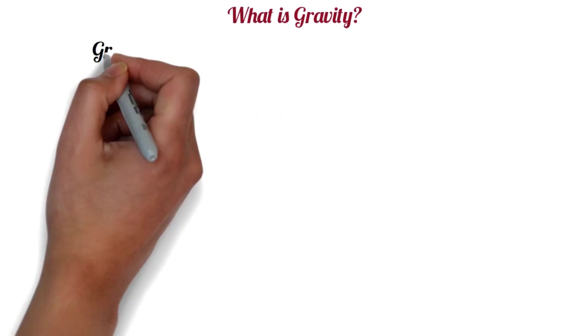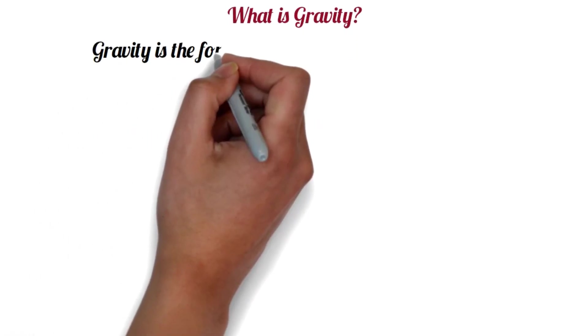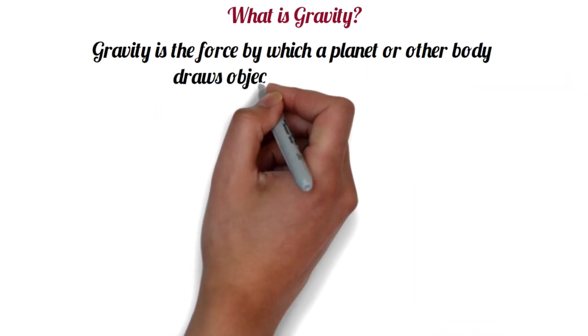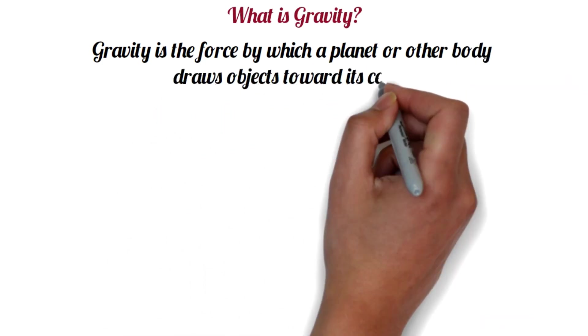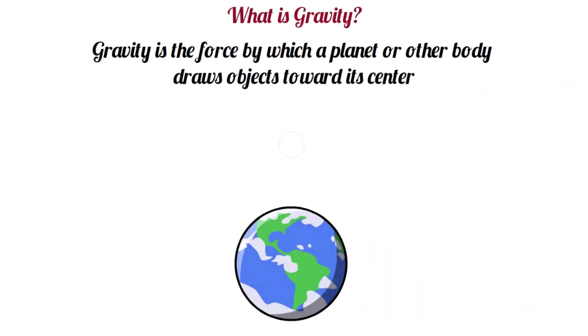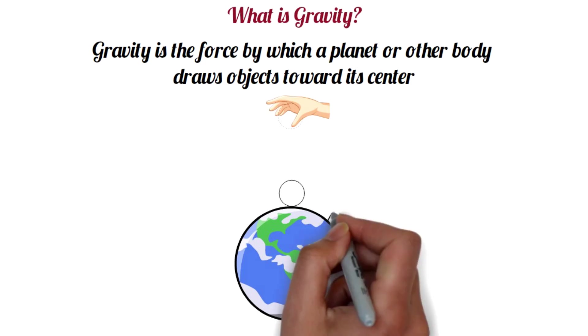What is gravity? Gravity is the force by which a planet or other body draws objects toward its center. As a result of this gravity, when an object is released from a distance above the surface of the Earth, the object moves towards the center of the Earth.